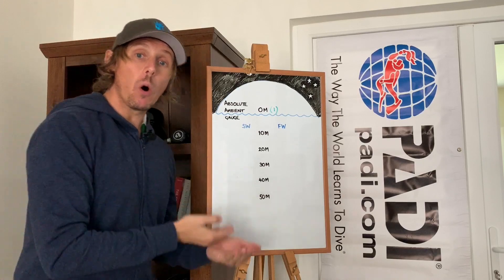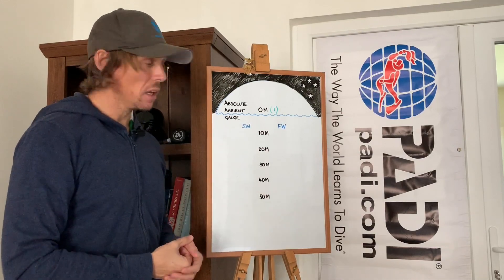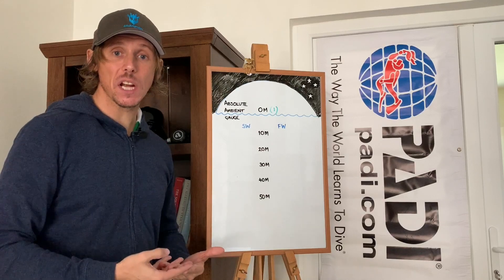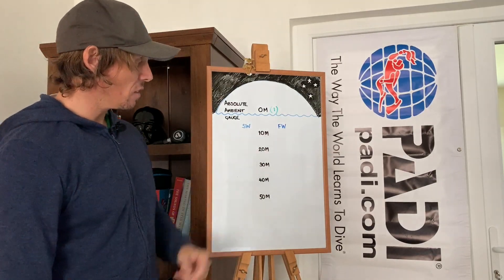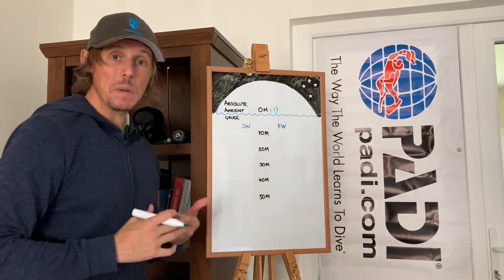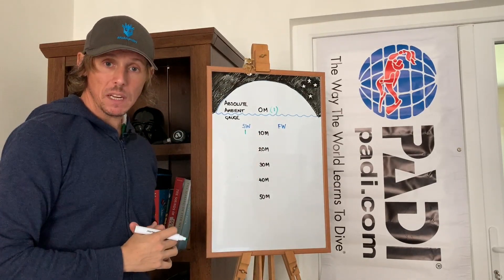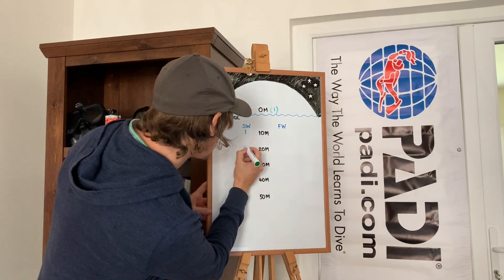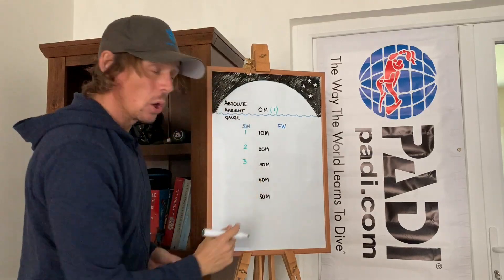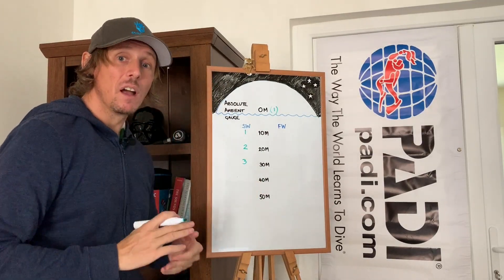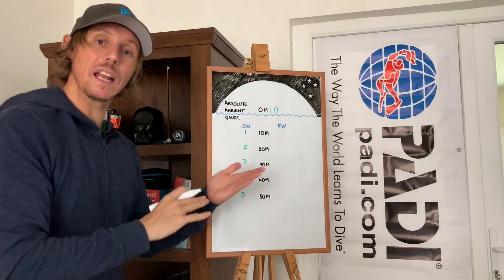In terms of the water, every 10 meters of sea water is equal to one atmosphere of pressure — the same pressure as the weight of the entire atmosphere. So we basically just divide by 10. Ten meters of sea water is one atmosphere, 20 meters is two, 30 meters is three, and this continues: 40 and 50 are four and five respectively.